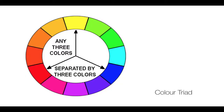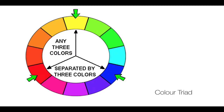Color triads also work together. In the color wheel, you pick any color and then move three colors away. So you take red, move three colors away and you come to yellow, then move three more and you come to blue — these three colors work together. You can start from any color and jump three colors in the color wheel, and that fourth color will go well with the color you started with.